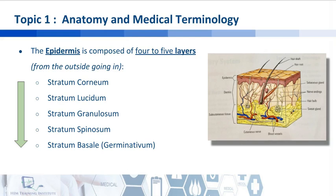From the outside going in, the different layers are the following: the stratum corneum, the stratum lucidum, the stratum granulosum, the stratum spinosum, and then finally the innermost layer is called the stratum basale or stratum germinativum.